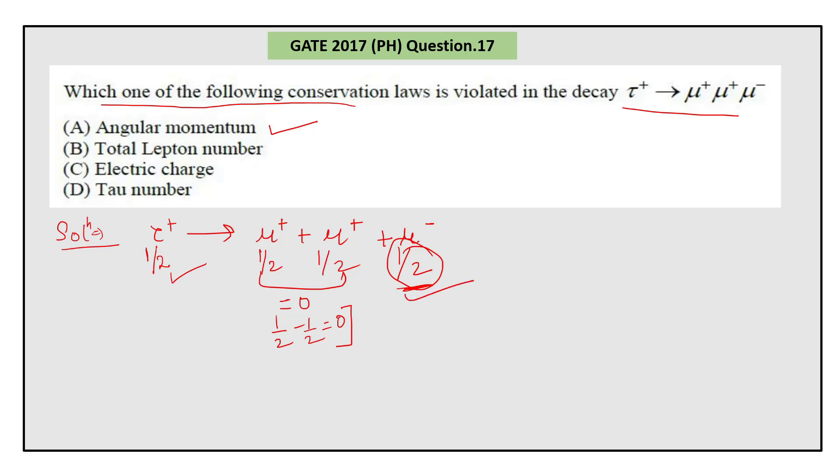The second option is B, total lepton number. You know, leptons are electron, electron neutrino, muon, muon neutrino, and tau, tau neutrino. Total lepton number will be equal to lepton number of electron, lepton number of muon, and lepton number of tau.